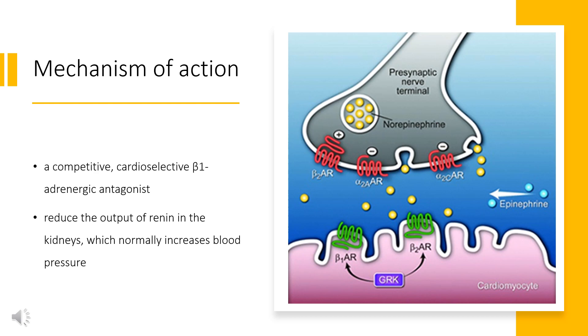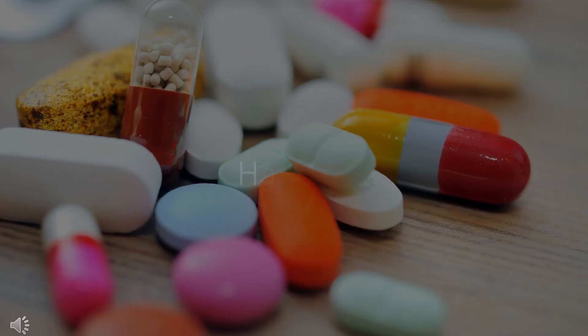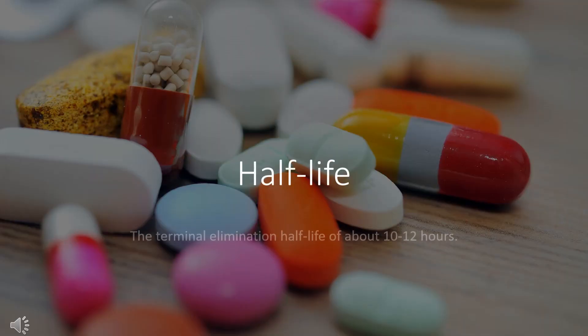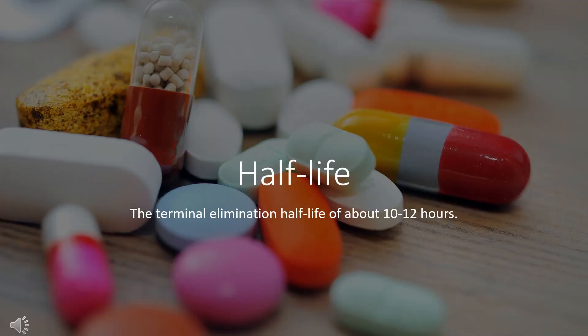Additionally, some central nervous system effects of bisoprolol may include diminishing sympathetic nervous system output from the brain, decreasing blood pressure and heart rate. A pharmacokinetic study in 12 healthy individuals determined the mean plasma half-life of bisoprolol to be 10–12 hours.